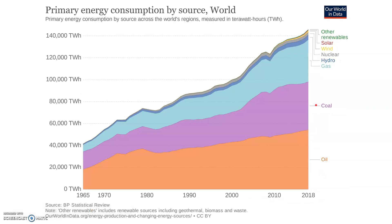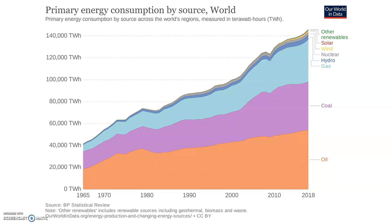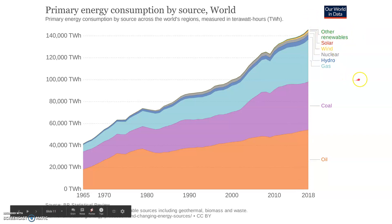If we zoom in a little bit more to 1965 up to the present day, we see the consumption supply source for the world. The big takeaway here is our massive use of fossil fuels — that's going to correlate pretty well to levels of carbon dioxide when we get to climate change. And even though there has been an increase of renewables and cleaner forms of energy, we still don't see them surpass fossil fuels by any means.